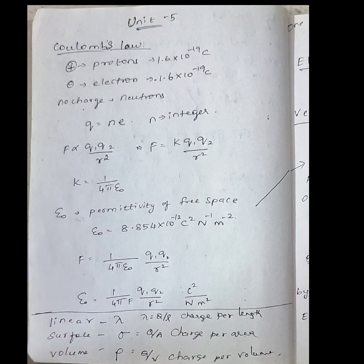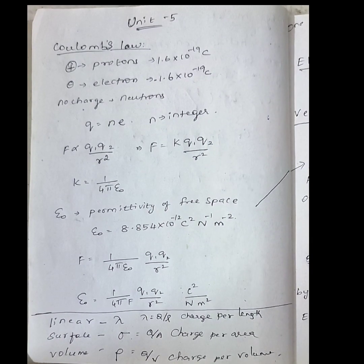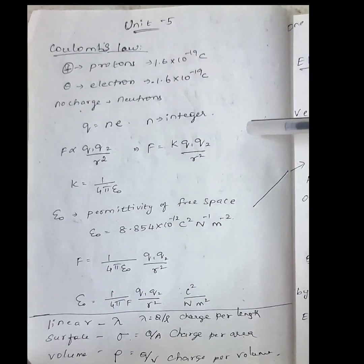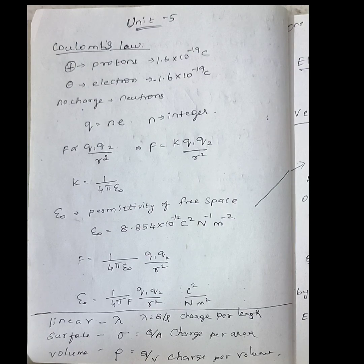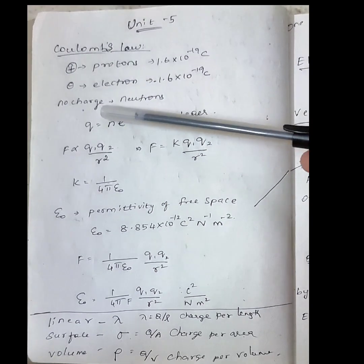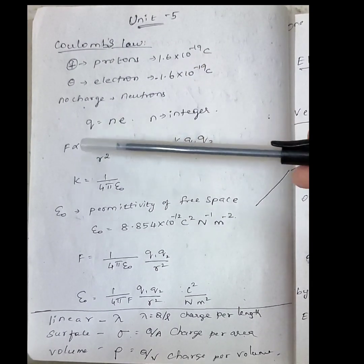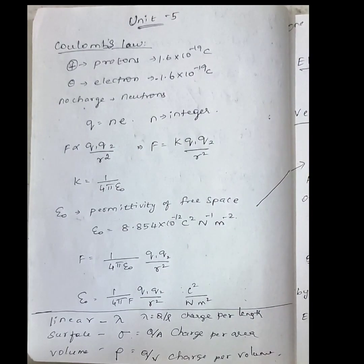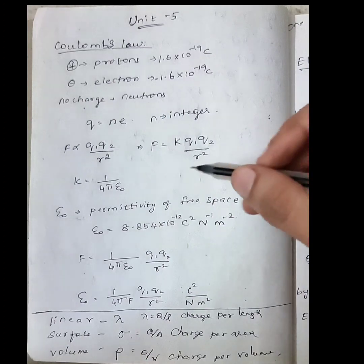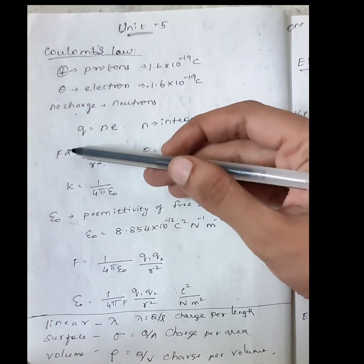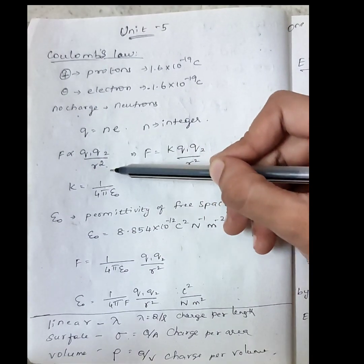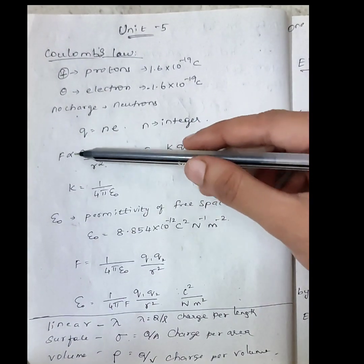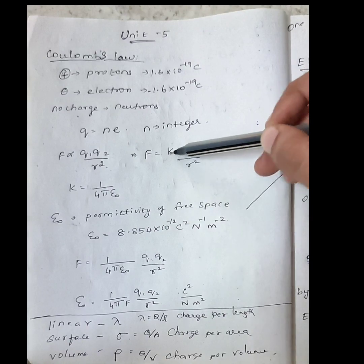When two charges are placed near each other, a force of attraction or repulsion acts between them. Coulomb studied this interaction and found that the force is directly proportional to the product of the two charges and inversely proportional to the square of the distance between them. So, F is directly proportional to q₁q₂ / r². Removing the proportionality, we introduce a constant k.